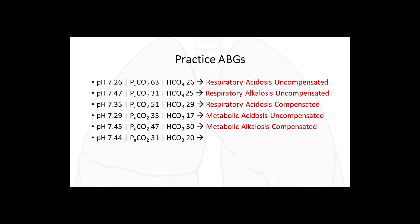Example six: pH 7.44 — normal, alkalotic side. PaCO2 31 — slightly decreased (less acid). Bicarb 20 — slightly decreased (less alkalosis). The pH is normal but on the alkalotic side — this is compensated. The condition is respiratory alkalosis compensated, and the compensation comes from the bicarb.